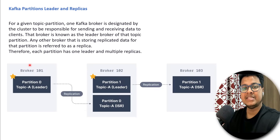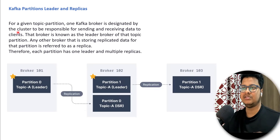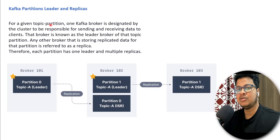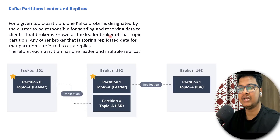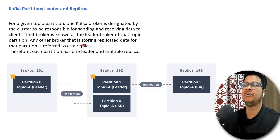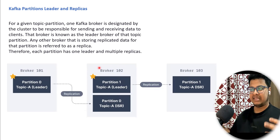We've seen that replication is happening. There is a concept called partition leaders and replicas. For a given topic partition, one Kafka broker is designated by the cluster to be responsible for sending and receiving data to clients — that broker is known as the leader broker of that topic partition. Any other broker storing replicated data for that partition is referred to as a replica. Therefore, each partition has one leader and multiple replicas.